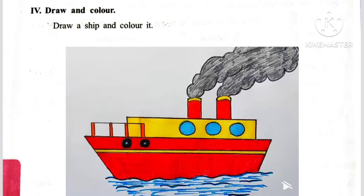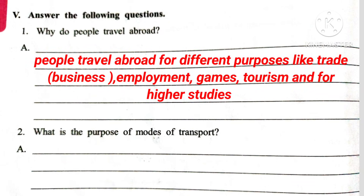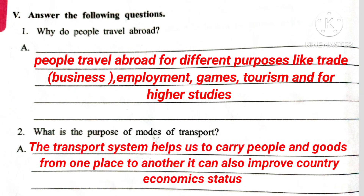Roman number 4: Draw and color a ship. Roman number 5: Answer the following questions. Question 1: Why do people travel abroad? Answer: People travel abroad for different purposes like trade, employment, games, tourism, and higher studies. Question 2: What is the purpose of modes of transport? Answer: The transport system helps us to carry people and goods from one place to another. It can also improve a country's economic status.